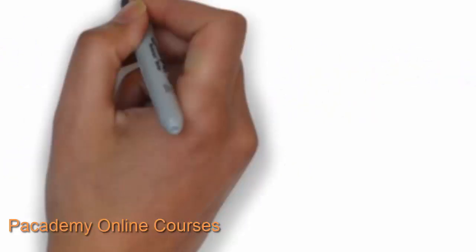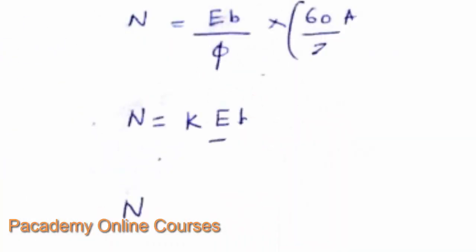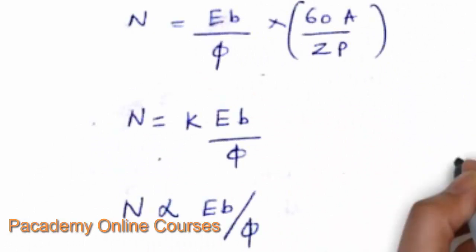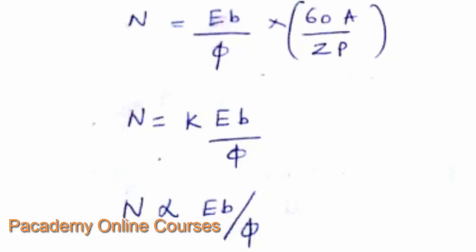Since V − I_A·R_A equals the back EMF E_B, the speed equation becomes N = E_B / (φ × 60A / ZP), where φ is the flux, Z is the number of conductors, and P is the number of poles. This simplifies to N = K·E_B / φ. So the speed is directly proportional to back EMF and inversely proportional to the flux per pole.